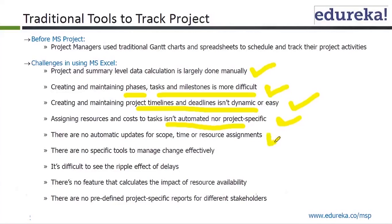There are no automatic updates for scope, time, or resource assignment. If you change something — say you change scope — there is nothing automatic to show how it affects your time and resource assignment. You again have to recalculate everything manually. There are no specific tools to manage change effectively. If you change a small thing, it is going to affect everything and you will have to recalculate, which is very time consuming.